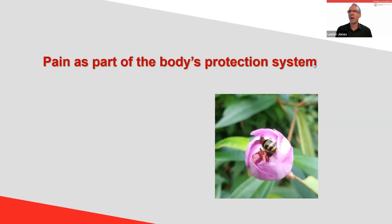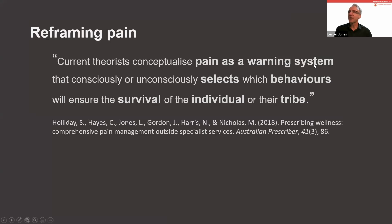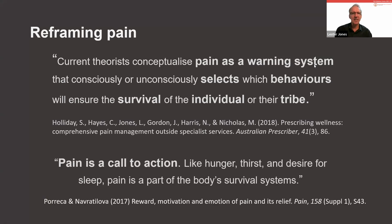The last concept I want to discuss is understanding pain as part of the body's protection system, moving away from thinking of pain as directly representative of what's happening in tissues. Pain is now thought of as a warning system that selects behaviours for survival of the individual and the tribe — recognizing that pain is very much entwined in our social makeup. Pain is not necessarily a sign of what's happening in tissues, but a call to action.